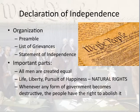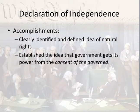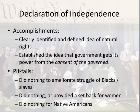Important parts of the Declaration of Independence are "all men are created equal" and the sentence that talks about natural rights — life, liberty, and the pursuit of happiness. It also talks about how whenever any form of government becomes destructive, the people have the right to abolish it. The accomplishments are clearly identifying natural rights and establishing that government gets its power from the consent of the governed. The pitfalls are that it did nothing to end the struggle for Black people or slaves, could arguably be seen as a setback for women, and did nothing for Native Americans — in fact it's probably a setback for them because it brings the colonists together.